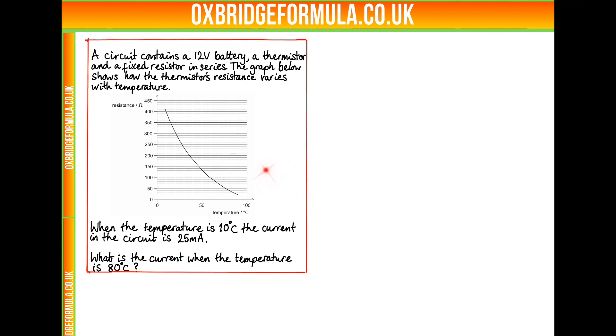We get this temperature dependent resistance. When the temperature is 10 degrees, the current in the circuit is 25 milliamps. What is the current when the temperature is 80 degrees?